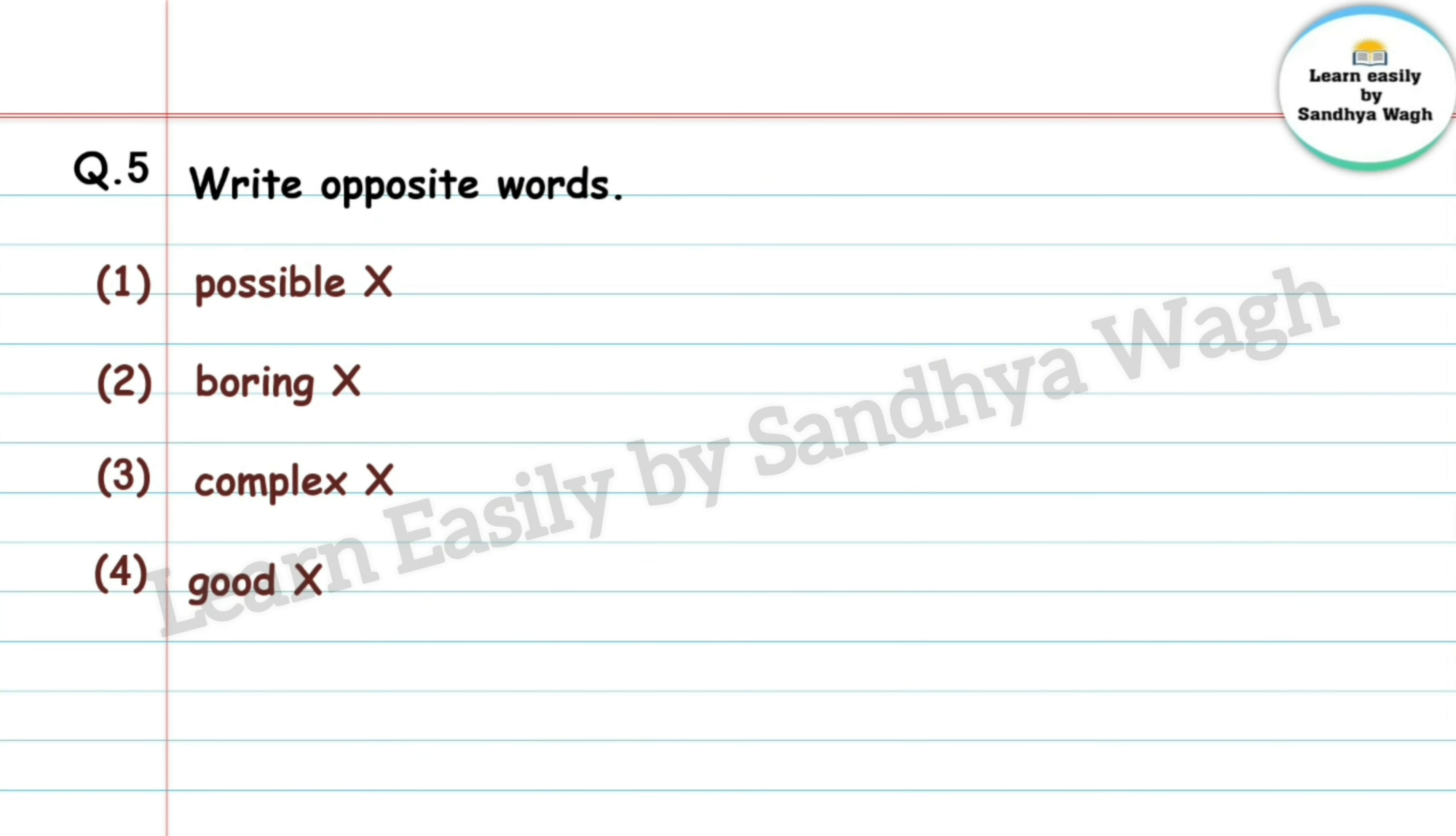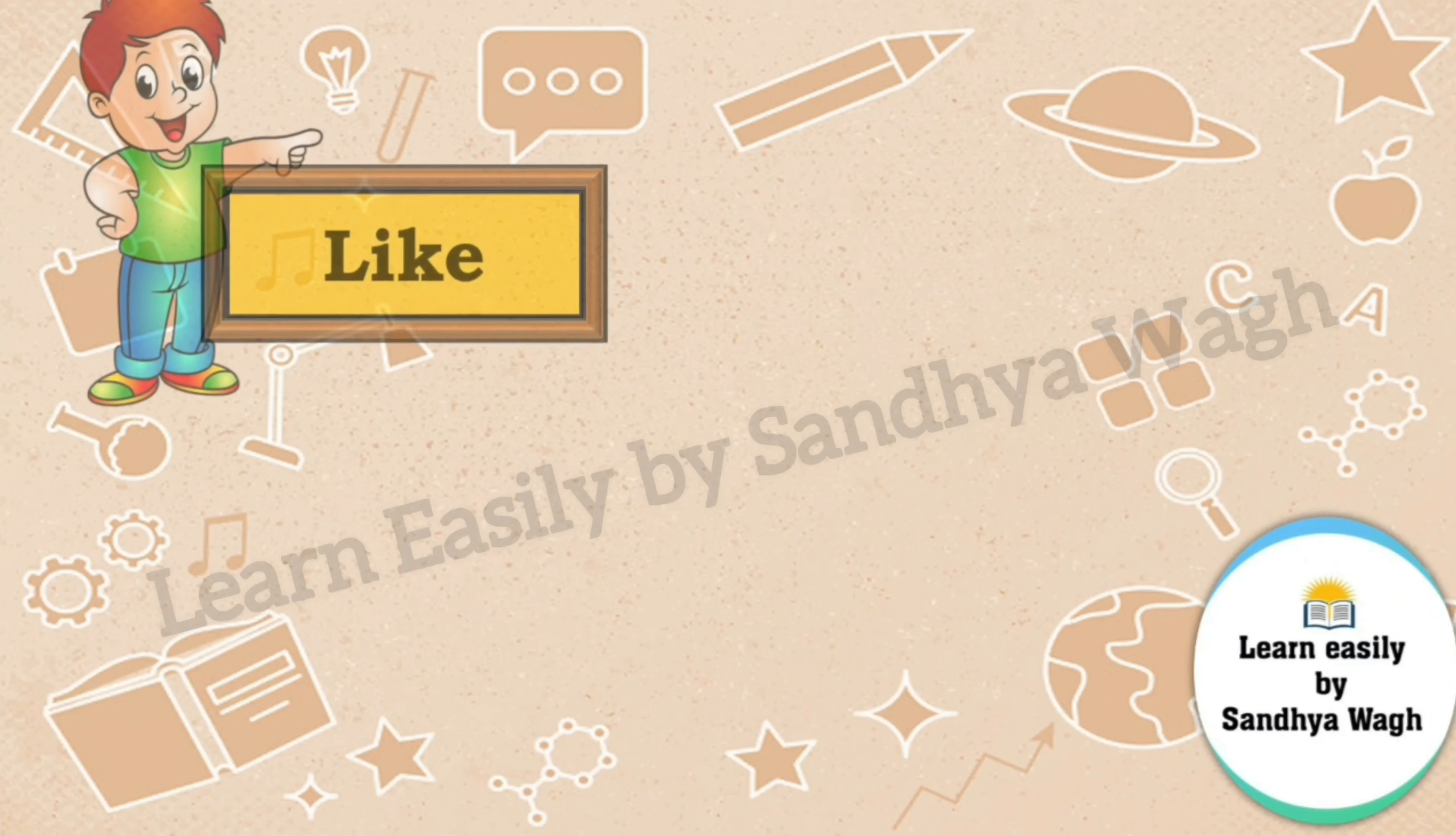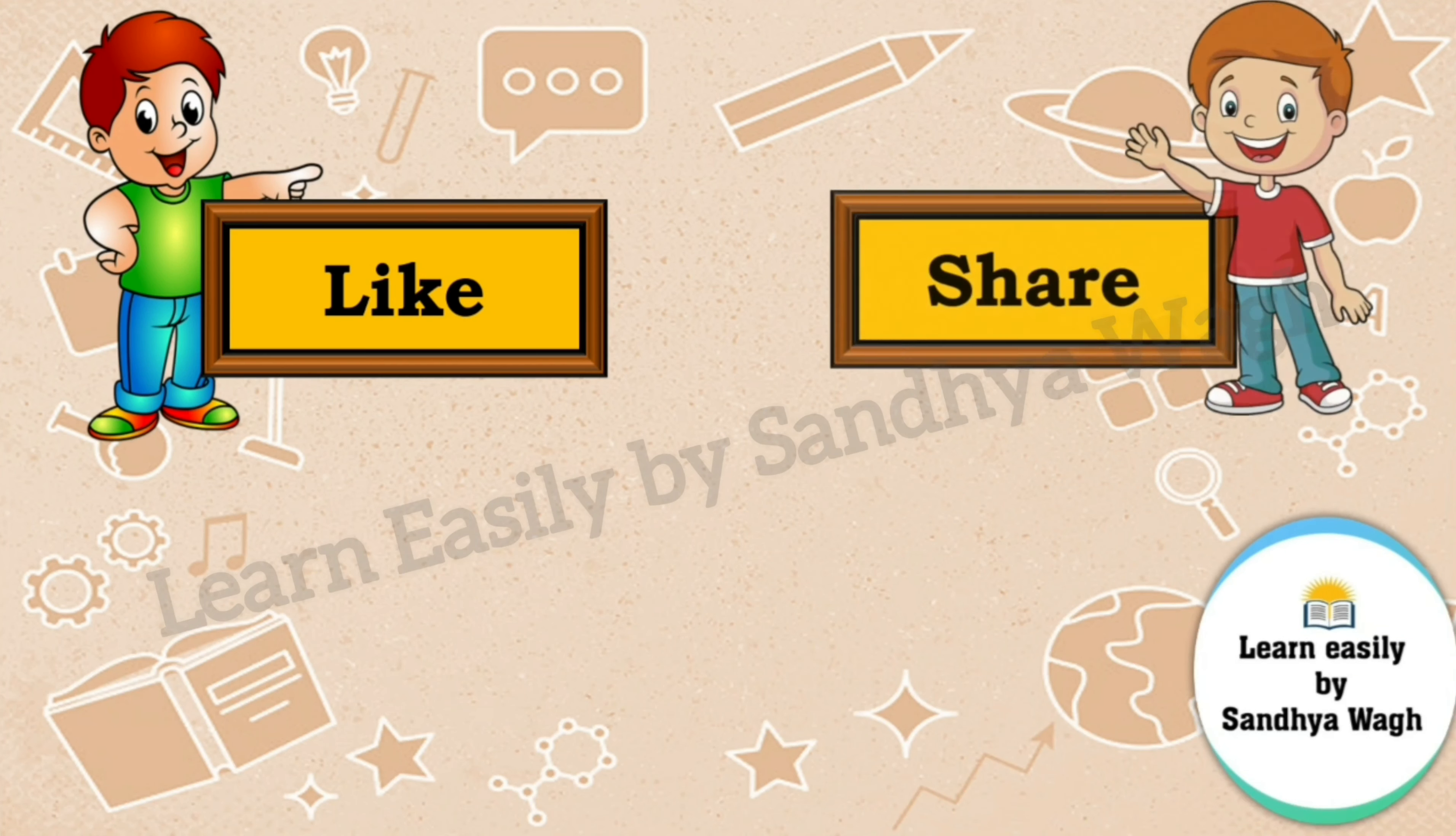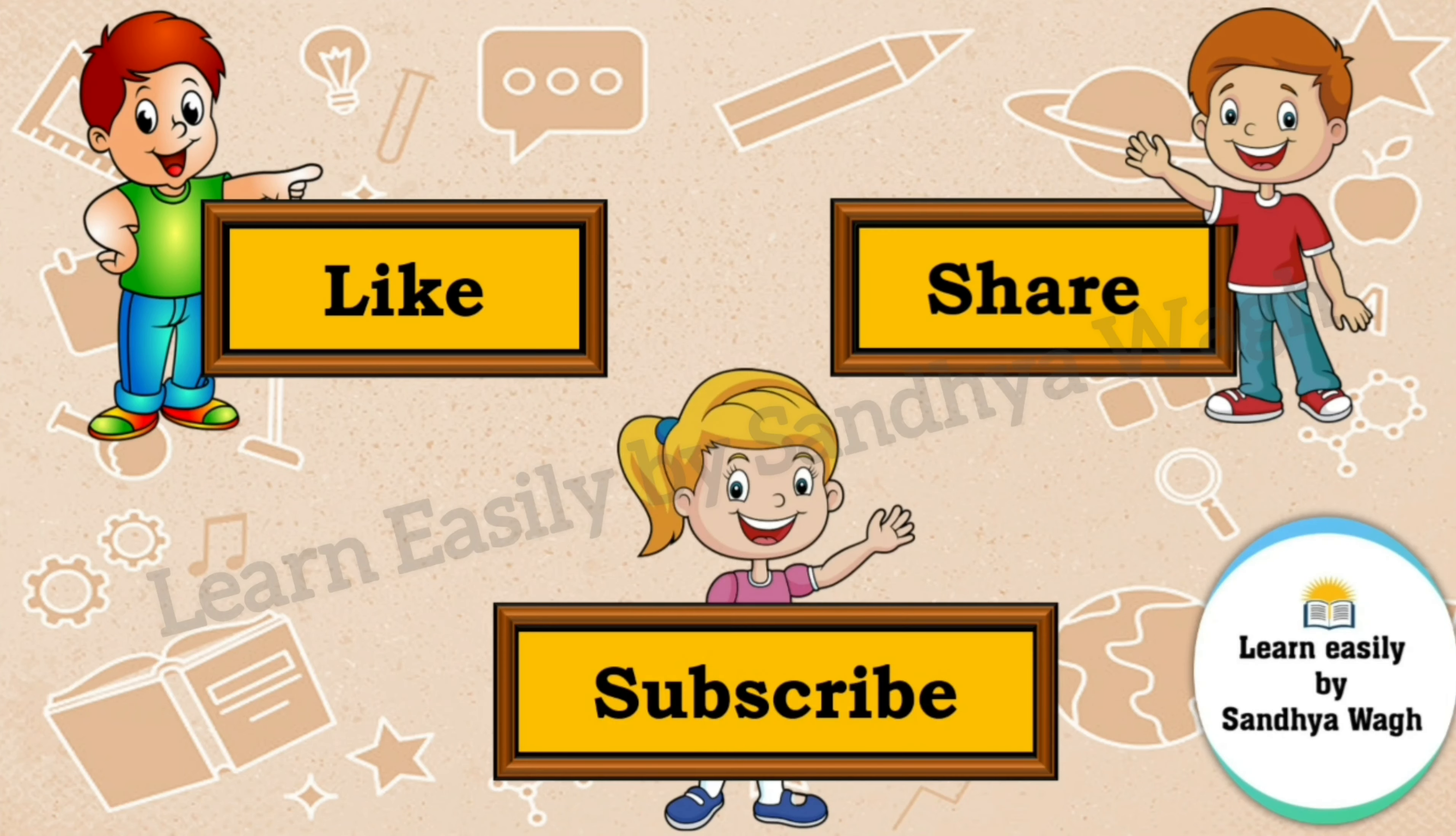Question 5: Write opposite words. Possible-impossible, boring-interesting, complex-simple, good-bad. So that's all for today, we will meet again in our next video. Till then keep learning, keep enjoying, bye bye.